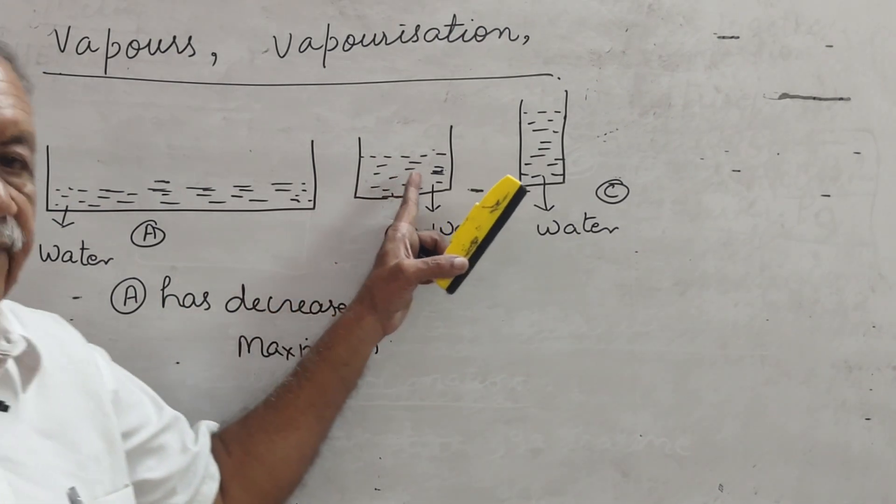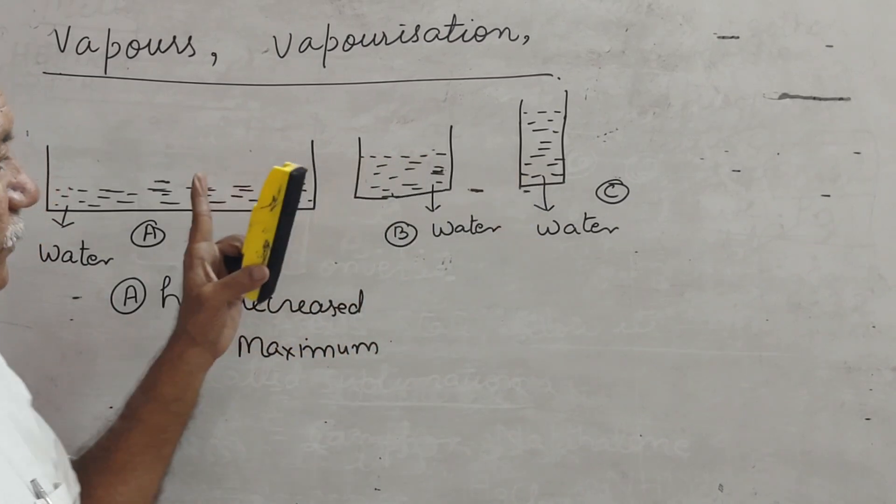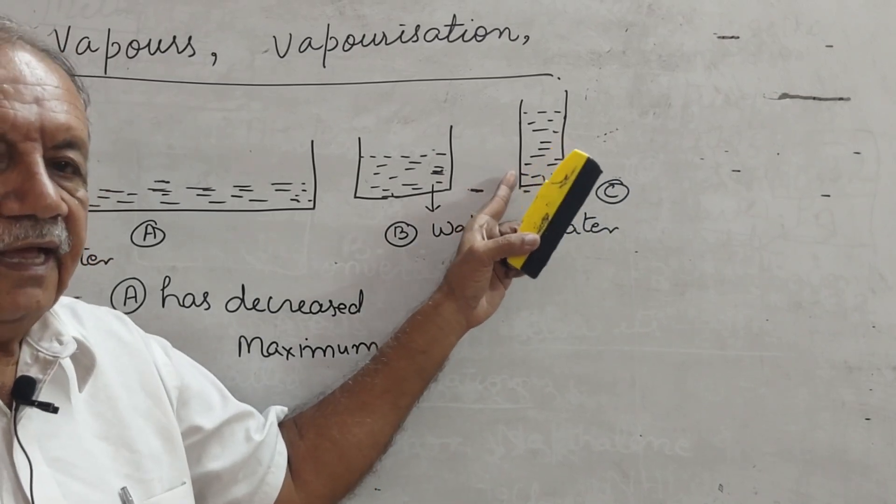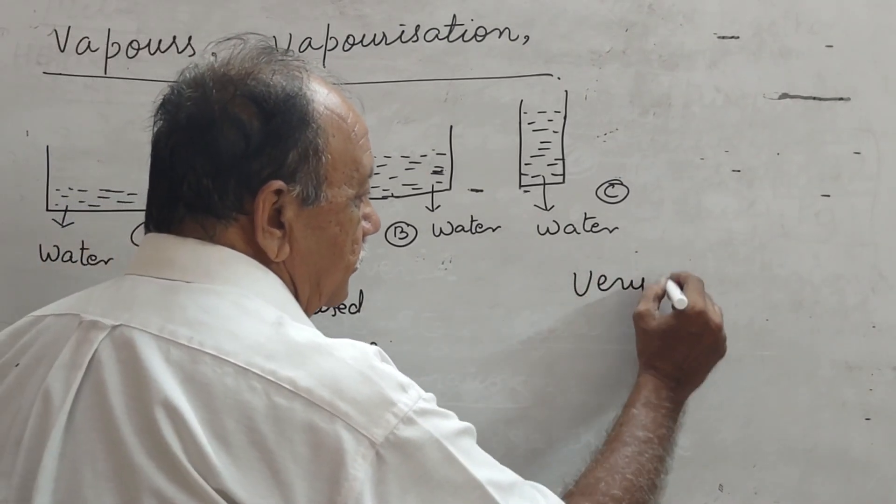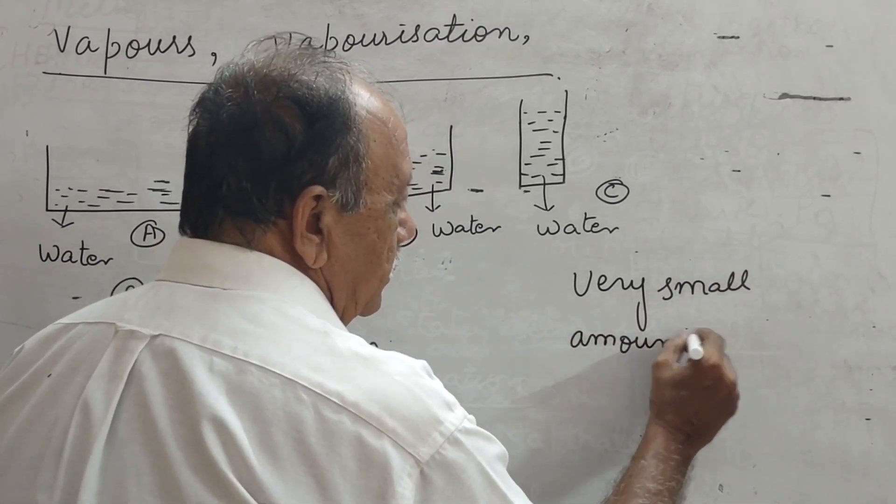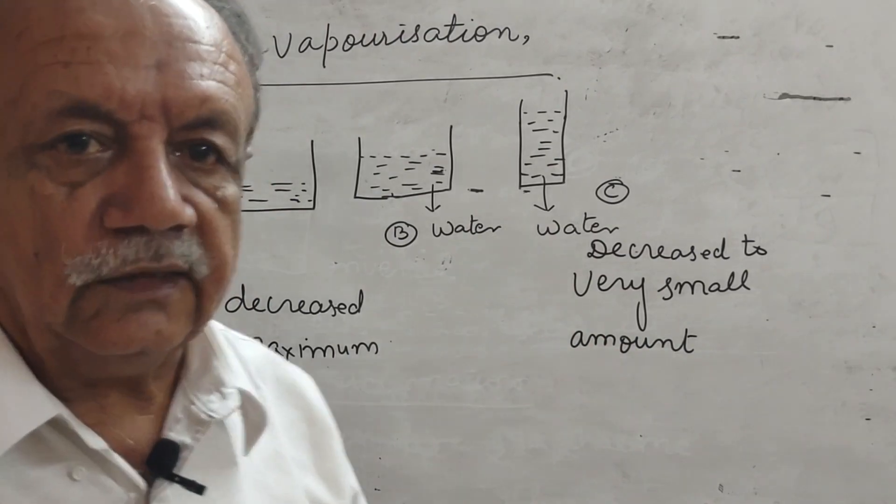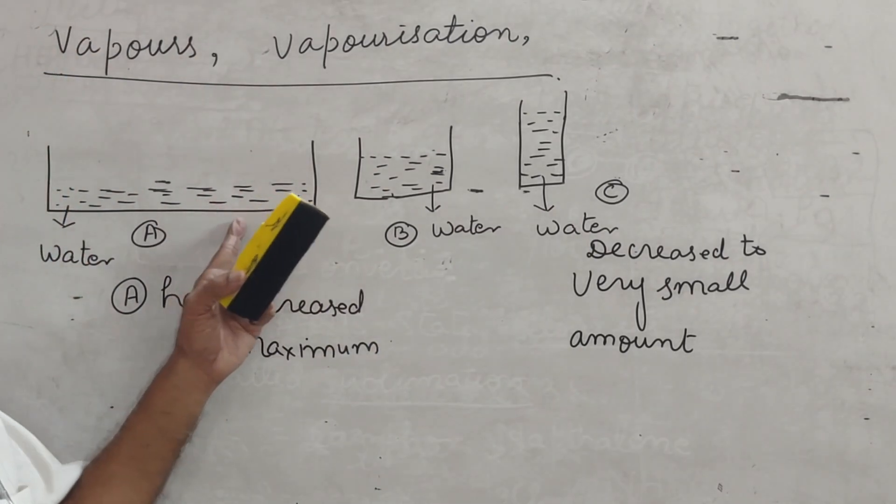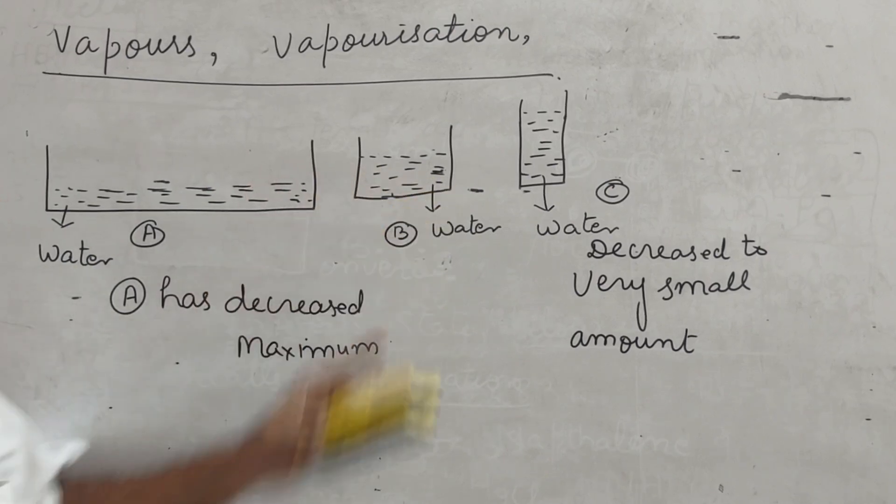Here, water quantity decreased, but not so much as compared to A. And in C, quantity of water has decreased to very small amount. It shows that water disappeared maximum as compared to this.